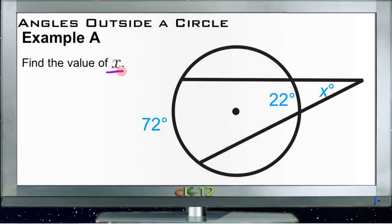All right, our first question asks us to find the value of x. So x is the measure of this angle out here. What we're looking for then is the difference between the two arcs that this angle describes. So we have a 72 degree arc and a 22 degree arc.